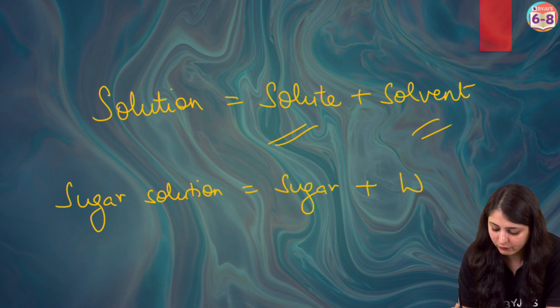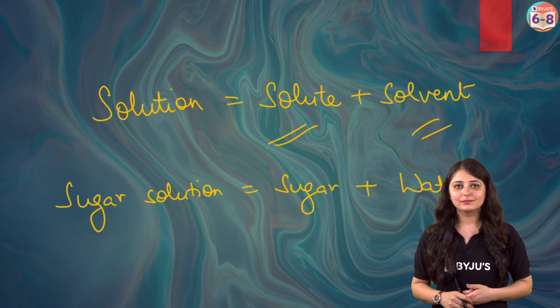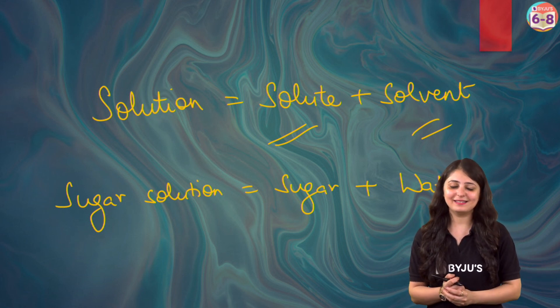Let's say we have a sugar solution - sugar is our solute and water is our solvent. So sugar plus water. If we have a cold drink, that is carbon dioxide and water, plus of course sweeteners that are also there which are acting as solute.